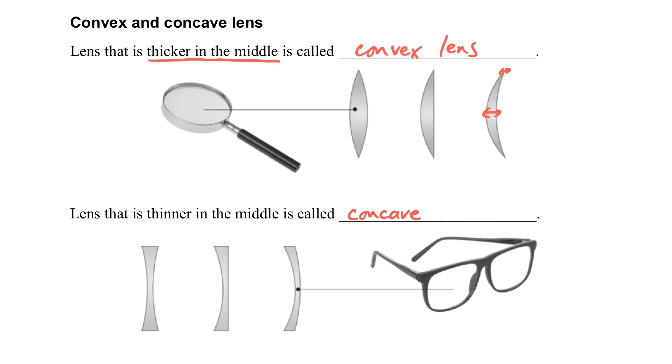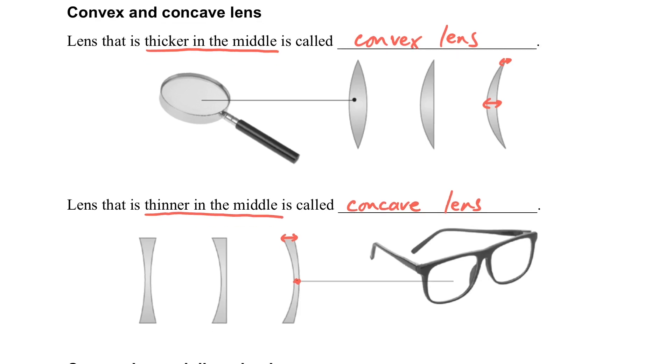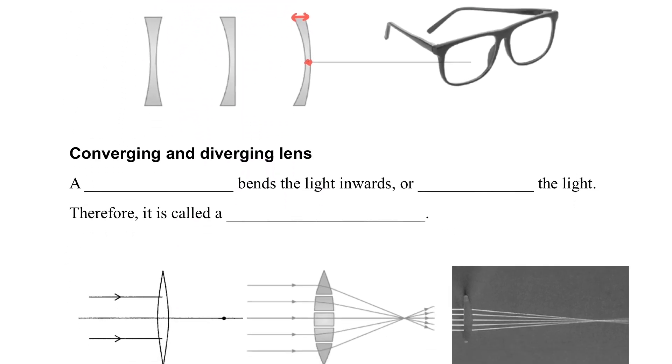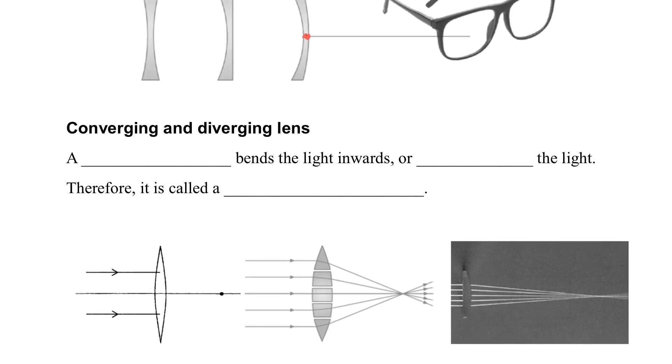And then the concave lens. The inner of the lens is thinner. This is a concave lens. So we can differentiate by the shape, and also we can differentiate them by their properties.